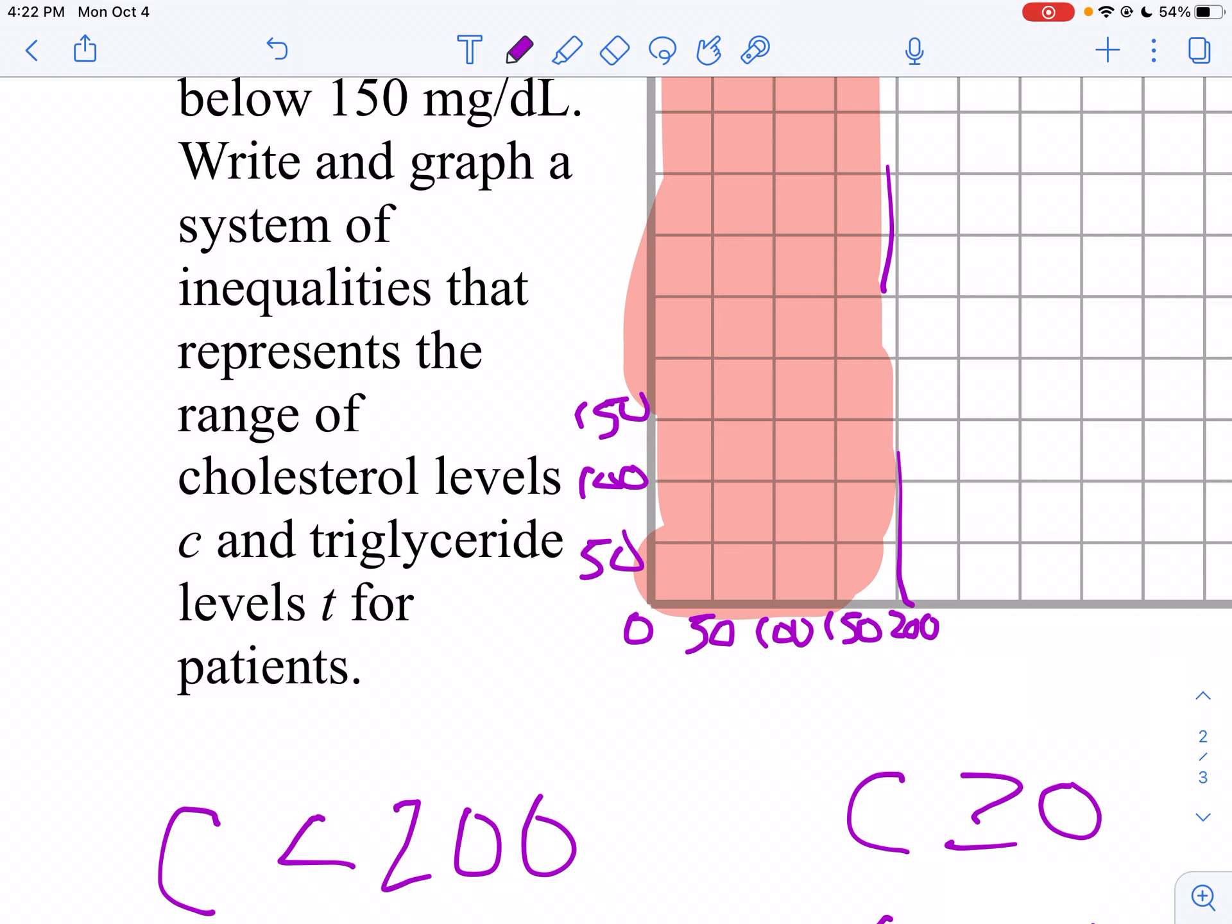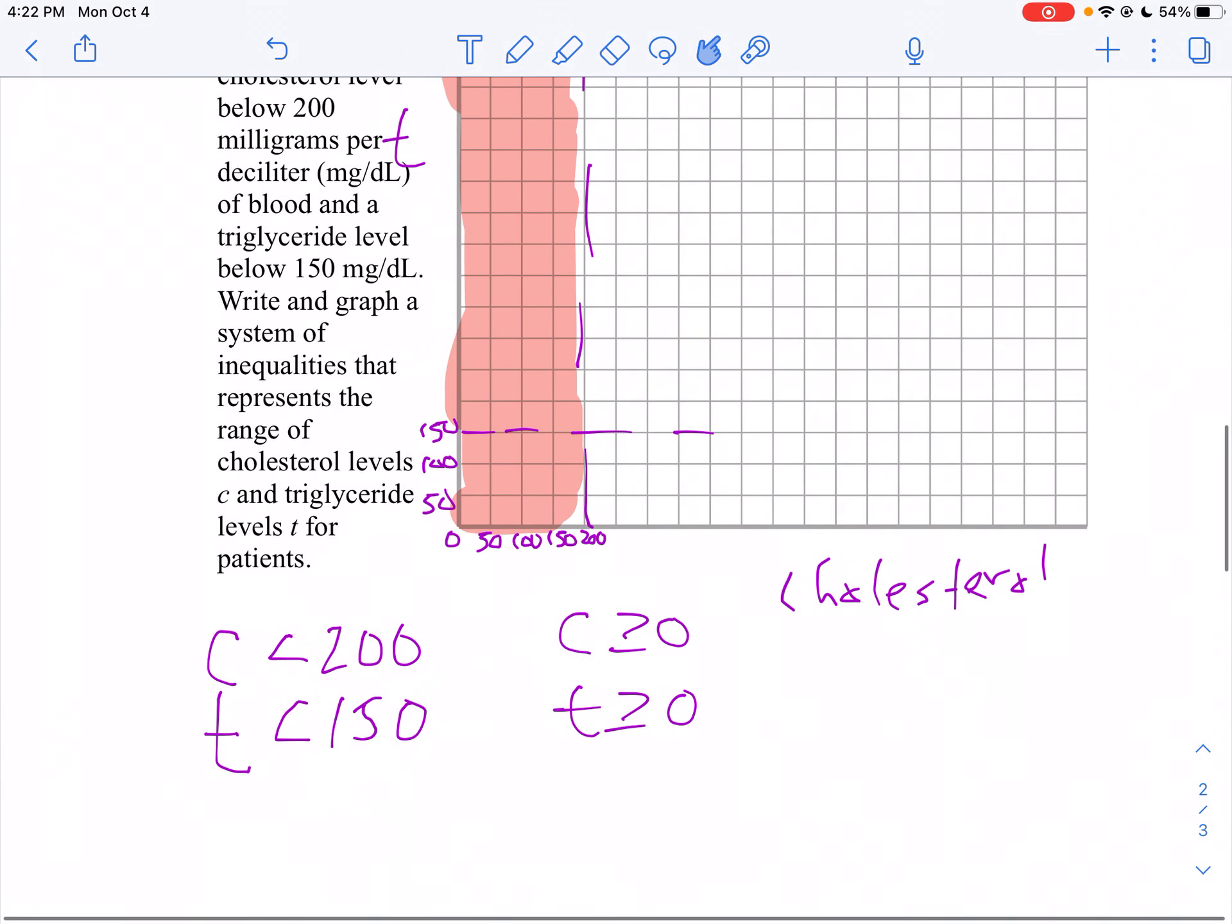So I'll make a dashed line going through that region. And I want to be less than that, so that would be below the line.